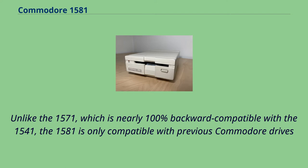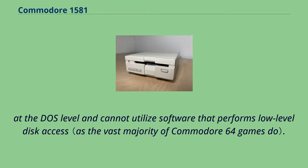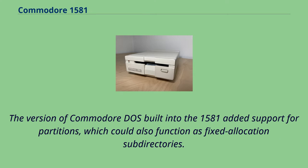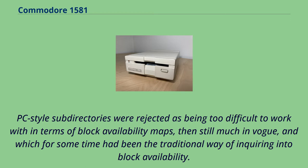Unlike the 1571, which is nearly 100% backward compatible with the 1541, the 1581 is only compatible with previous Commodore drives at the DOS level and cannot utilize software that performs low-level disk access. The version of Commodore DOS built into the 1581 added support for partitions, which could also function as fixed allocation subdirectories. PC-style subdirectories were rejected as being too difficult to work with in terms of block availability maps, then still much in vogue, and which for some time had been the traditional way of inquiring into block availability.